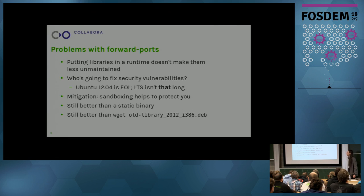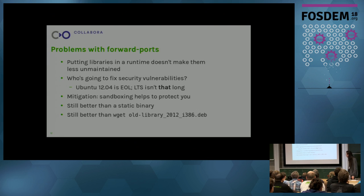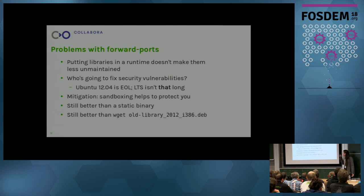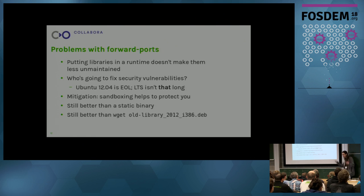There are a few unsolved problems with forward ports, and I can see why distributions might not like the idea. If you have some unmaintained libraries and put them in a runtime, that doesn't magically make them maintained — someone still has to do the work or acknowledge it won't be done. Ubuntu 12.04 went EOL last summer; it's long-term support, but there's long-term and there's long-term. But if you're going to use this in production anyway, we can at least sandbox it, and that's got to count for something. It's better than a static binary where you can't update it even if you wanted to, and infinitely better than what people tend to do: go to archive.ubuntu.com, wget an ancient library without apt, just install it, and cross your fingers.